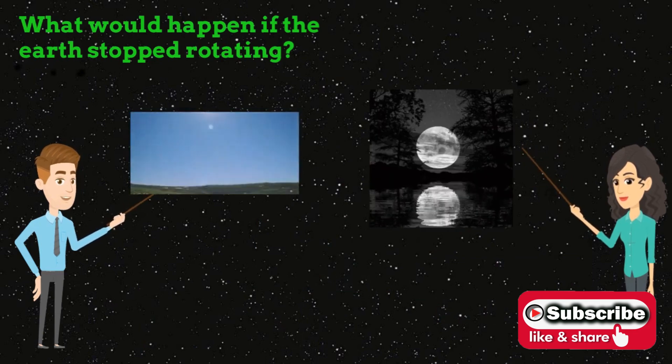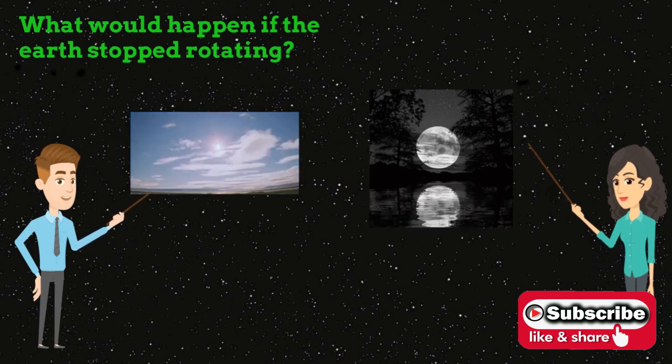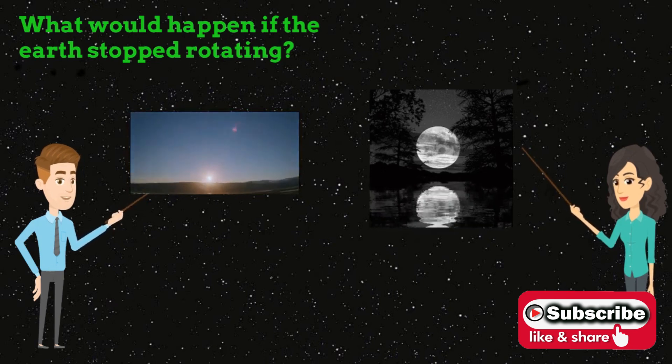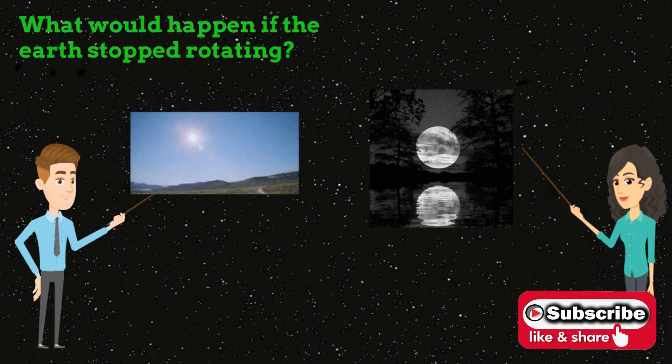During daytime for six months, the surface temperature would depend on your latitude, being far hotter than it is now at the equator than at the poles where the light rays are more slanted and heating efficiency is lower.